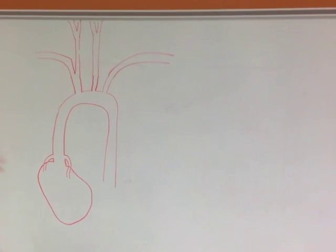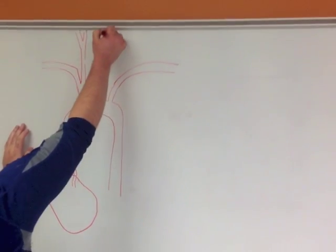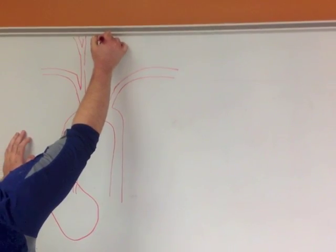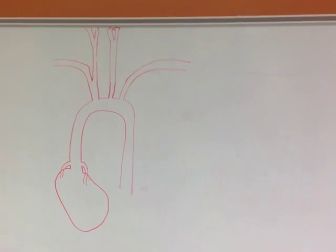And then each of the common carotids will split into an internal and external carotid artery. And I know it looks opposite of how you might expect, but they're actually going to twist behind each other like that so that the internal goes inside the skull and the external stays for the face.